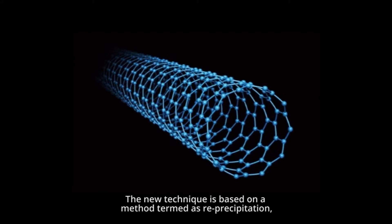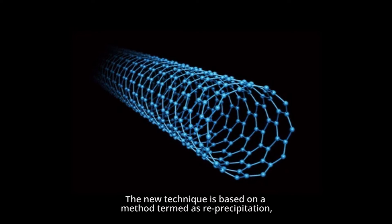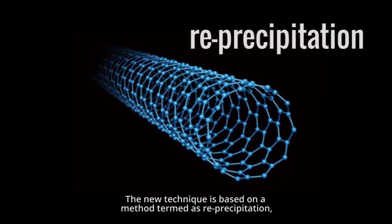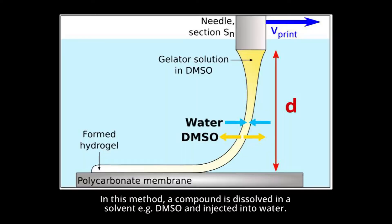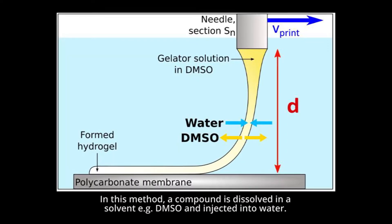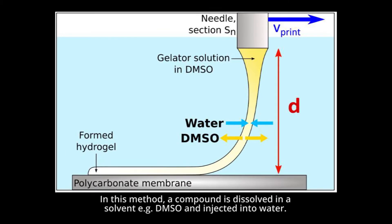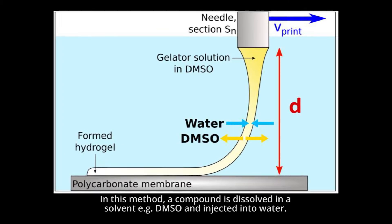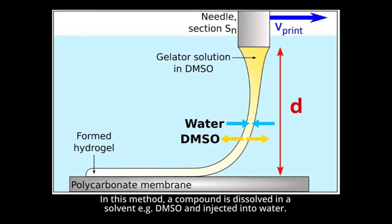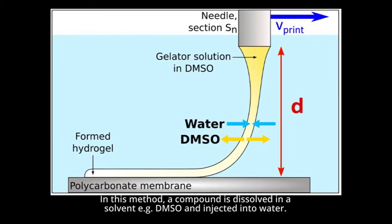The new technique is based on a method termed as reprecipitation. In this method, a compound is dissolved in a solvent, e.g. DMSO, and injected into water.